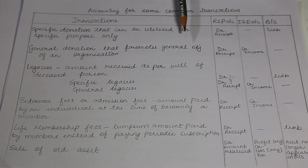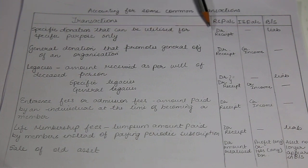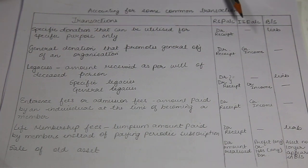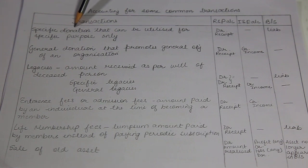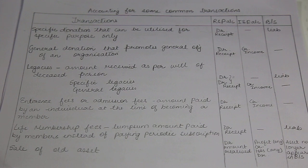In the receipts and payments account, the debit side is the receipt side and the credit side is the payment side. Since this is a receipt of money, there will be a debit. As this is a specific donation, it is not income for the current year — we do not consider this as revenue income. Specific donation is considered capital income, so it goes to the liability side of the balance sheet. It will not be considered in the income and expenditure account.